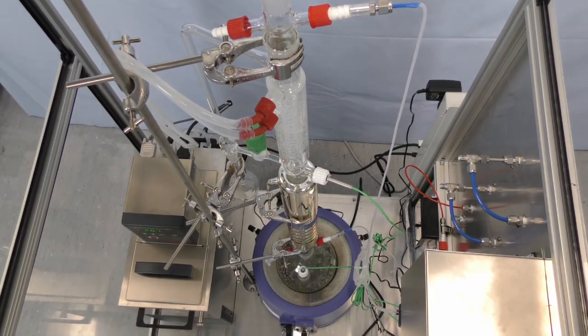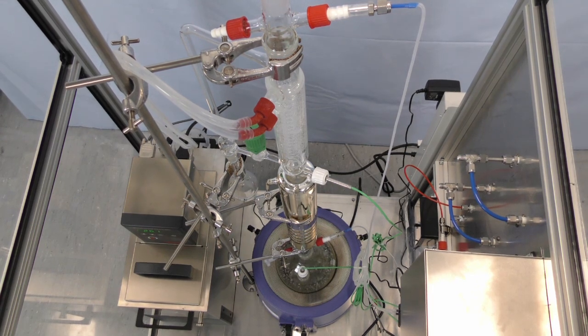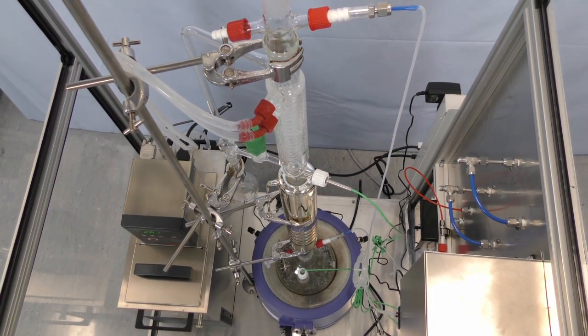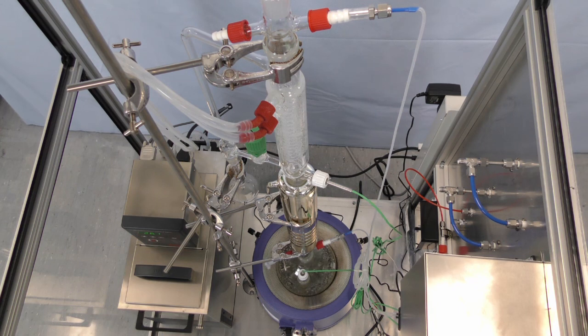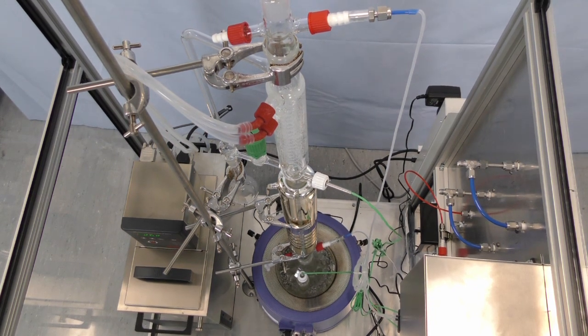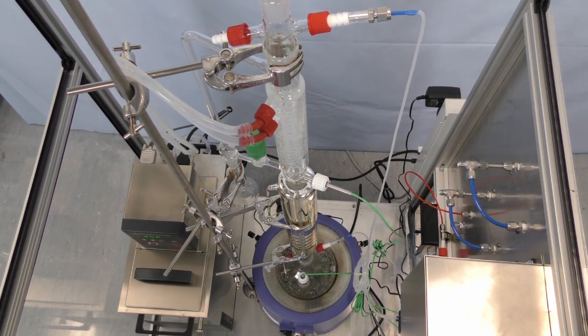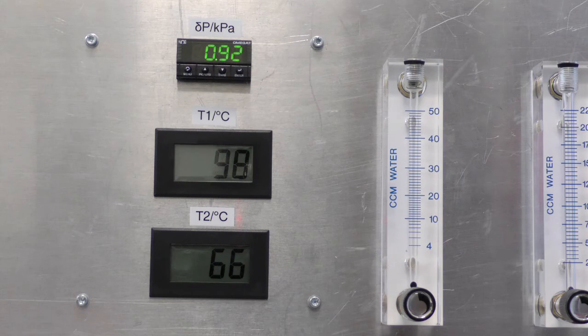Measurements of this type can be used to determine the overall column efficiency by comparing our still, comprising reboiler and ten sieve plates, with the number of theoretical equilibrium stages that would be required to achieve the same distillate composition given the same bottoms composition.